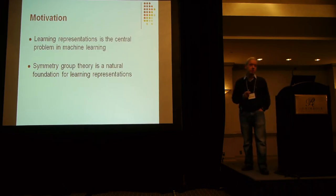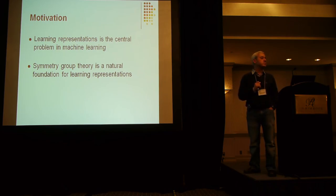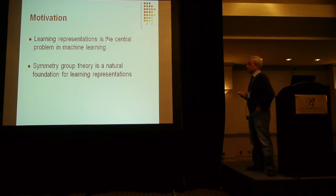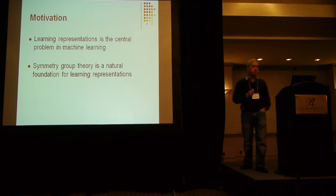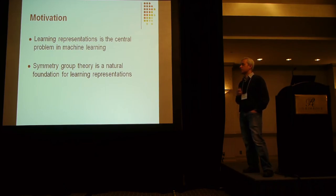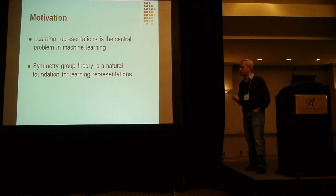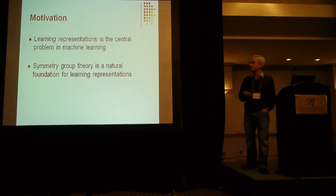The first part of the motivation, which I don't think needs to be delivered for this audience, is that learning representations is the central problem in machine learning. If we can't solve it, we can't solve learning. The second part, however, might be somewhat less obvious: symmetry group theory, I believe, is a natural foundation for learning representations. We can perhaps get a lot of mileage out of applying it to this problem. You can look at the topics to follow as an argument towards this end, which you may or may not agree with.